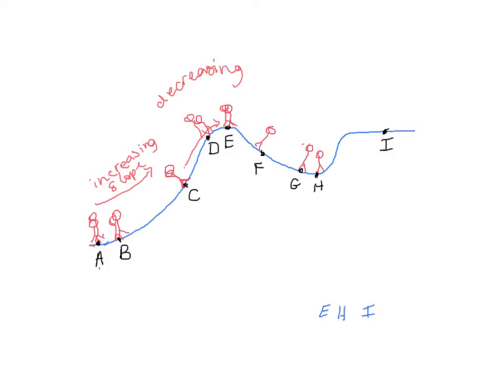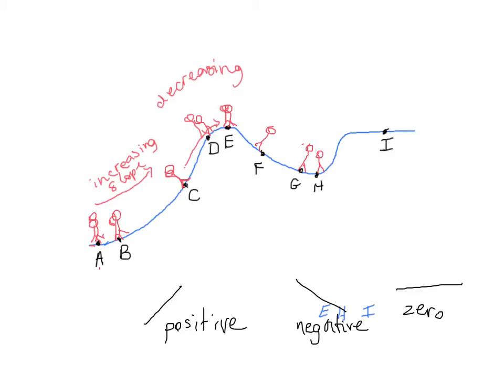As he's going up the hill, the slope of the curve is positive — that is a positive slope. Going down the hill we have a negative slope. And when he's flat — not climbing up or running down — his slope is zero. But we need more detail: we need to know exactly what is happening at each point when we look at increasing and decreasing slopes.